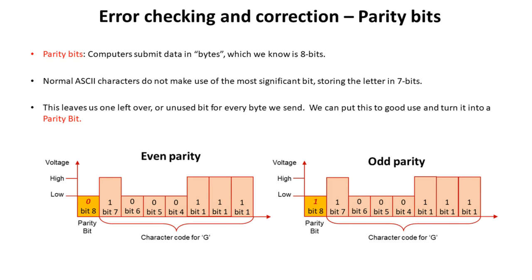Now if during transmission one of these bits gets corrupted — say this one gets replaced with zero — at the other end the computer will know that we're using even parity. It will add up the number of ones: one, two, three, realize that we should have an even number, and it will know that this eight-bit, one-byte letter has arrived corrupted. At this stage it's unable to tell which bit has been corrupted, so it has to ask for the bytes to be resent. Of course if two bits came corrupted then we would end up back at even parity and the receiving computer would be none the wiser. This is why a number of error checking techniques are used and we don't simply rely on any given one.